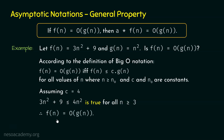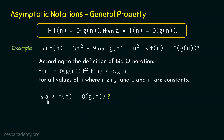This means F(n) is Big-O of G(n), because F(n) is less than or equal to some constant times G(n). So F(n) is Big-O of G(n) is confirmed. If this is true, then A times F(n) must also be Big-O of G(n).